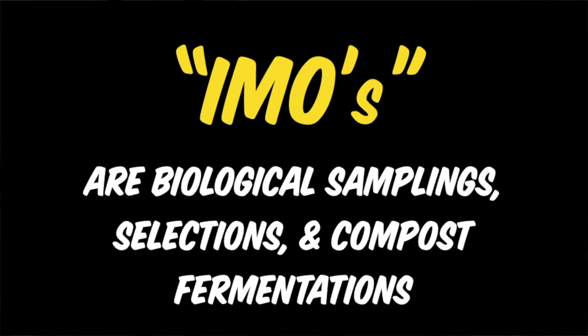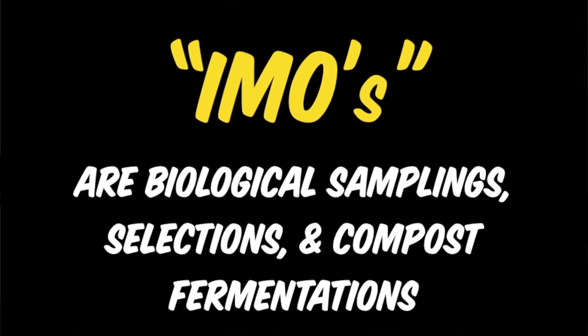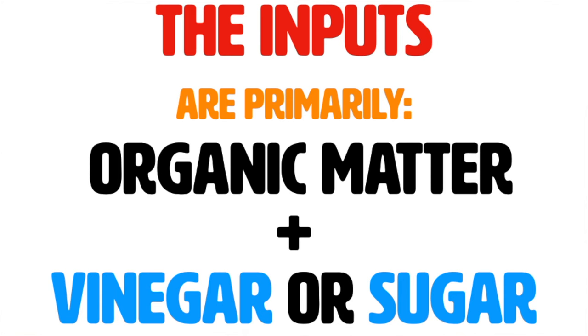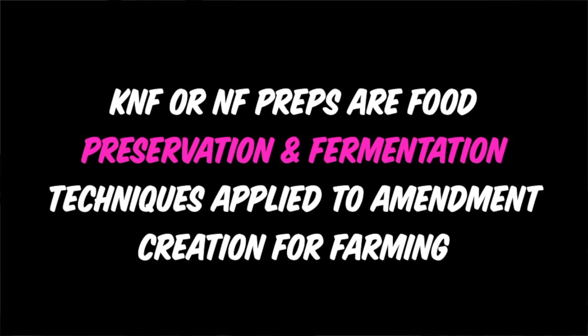For many of us, when we create things and get really fluent at them, we tend to eyeball it, do it by hand and by feel. Formalizing recipes can sometimes be hard for innovators, especially people who are deeply connected to the landscape, the plants, and the soil. IMOs are biological samplings, selections, and compost fermentations. These indigenous microorganisms are a specific sampling with a selection process, used strategically as inputs in composting, foliar sprays, and soil soaks.